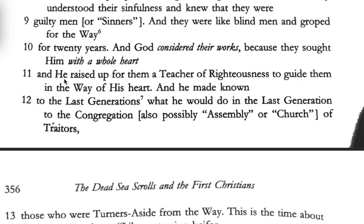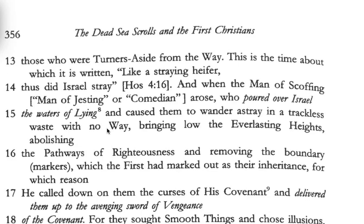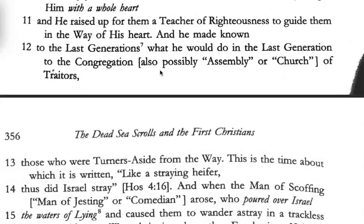'Because they sought him with the whole heart, he raised up for them a teacher of righteousness to guide them in the way of his heart, and he made known to the last generations what he would do in the last generation to the congregation' — this word for congregation could be assembly or church — 'to the assembly of the traitors, those who were turners aside from the way.' To turn aside from something, you have to be a member first, so there is this group of traitors.